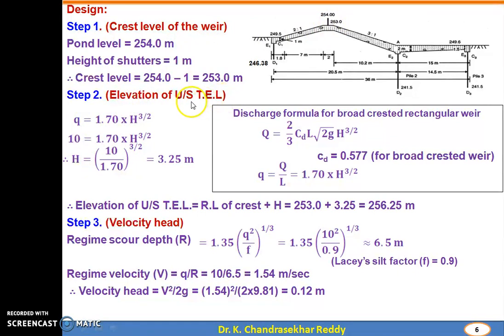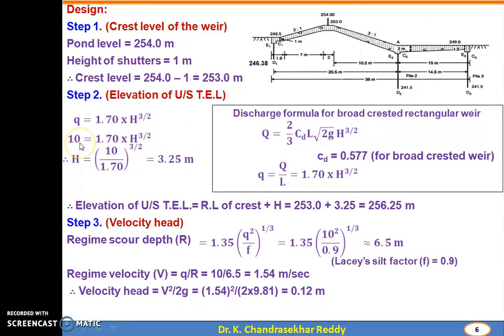Step 2: Elevation of upstream side total energy line. Recalling the discharge formula for a broad-crested rectangular weir: q = 1.7 × h^(3/2), where the coefficient of discharge is 0.577. Given q = 10 cumecs per meter, substituting into the equation gives h = 3.25 m. Therefore, elevation of upstream total energy line = RL of crest + h = 253 + 3.25 = 256.25 m.